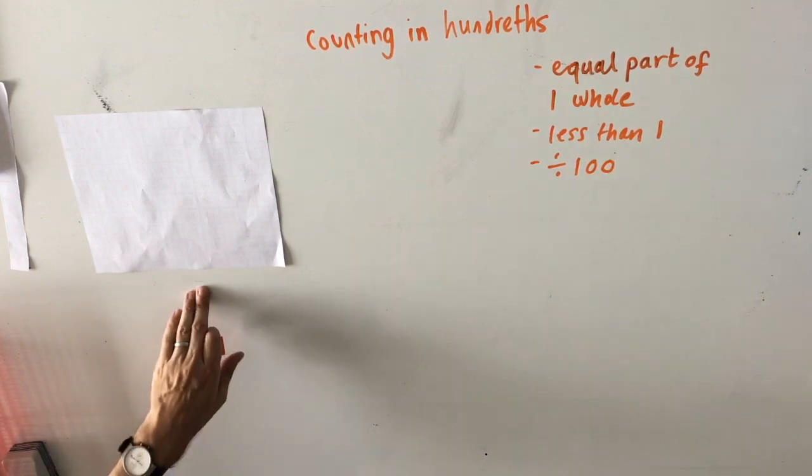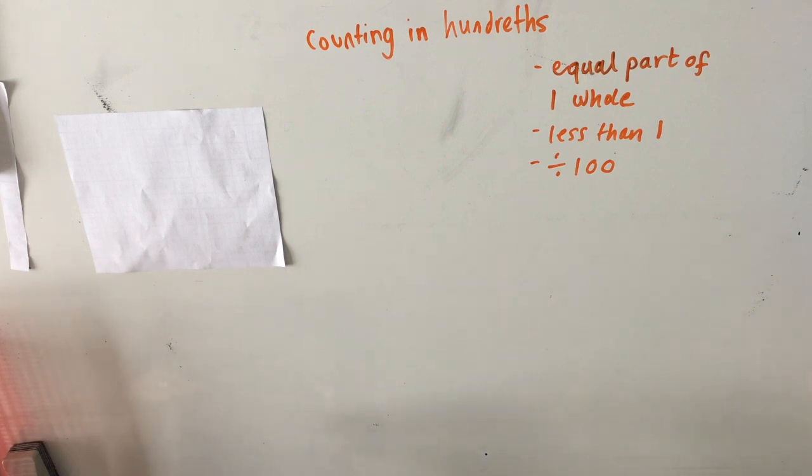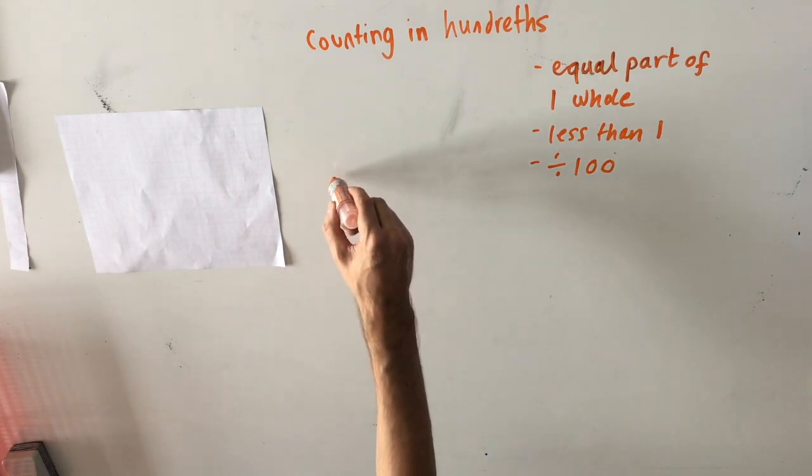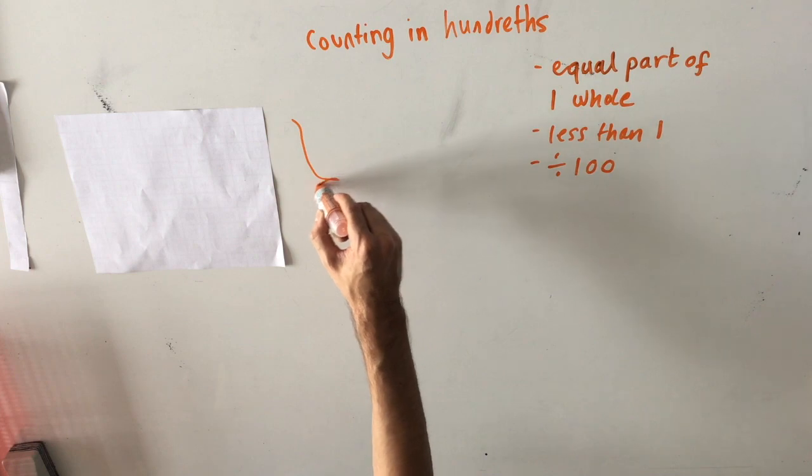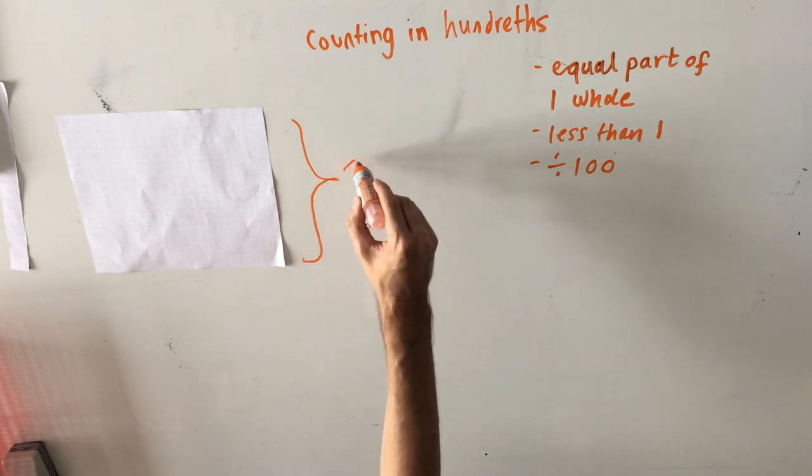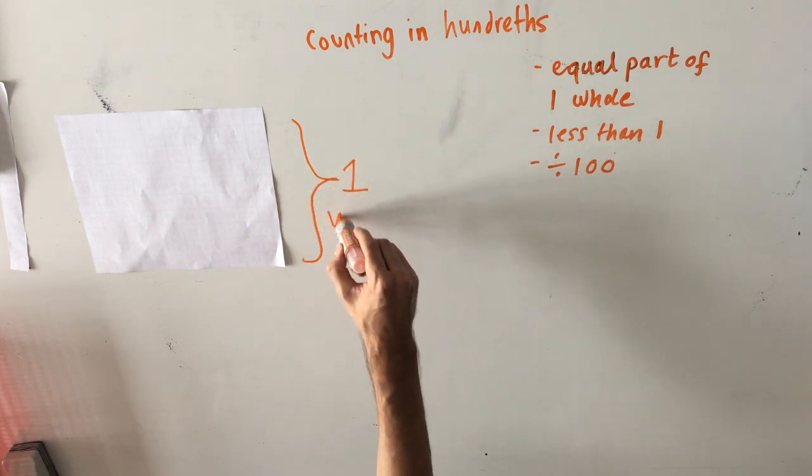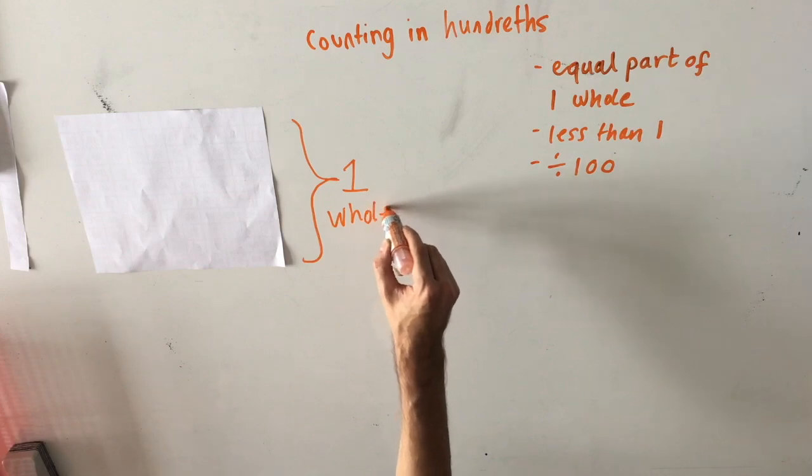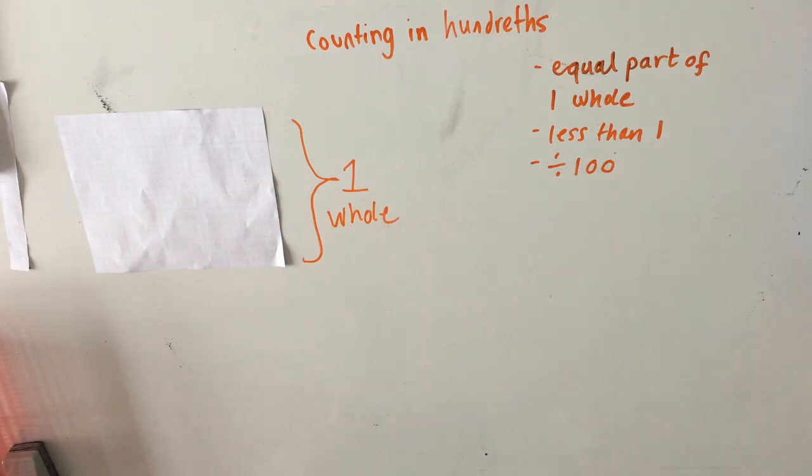So here I have a sheet of paper that represents my whole. All of this together represents one whole. However, when I want to think about it in terms of hundredths, I need to split that whole, or divide that whole, into one hundred pieces. And each of those one hundred pieces must be equal in size.